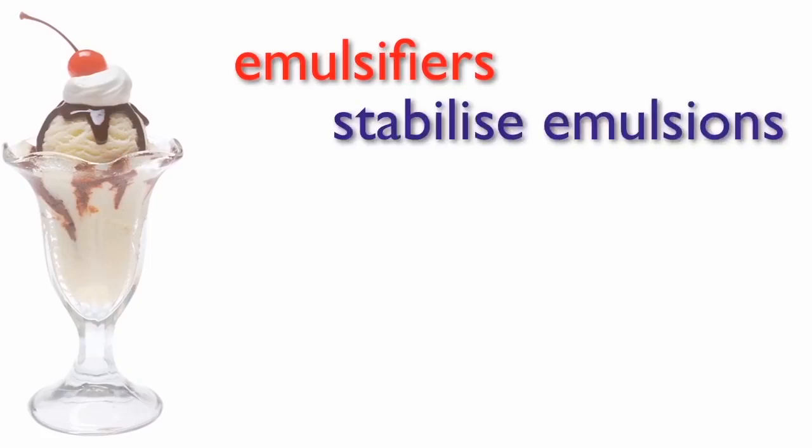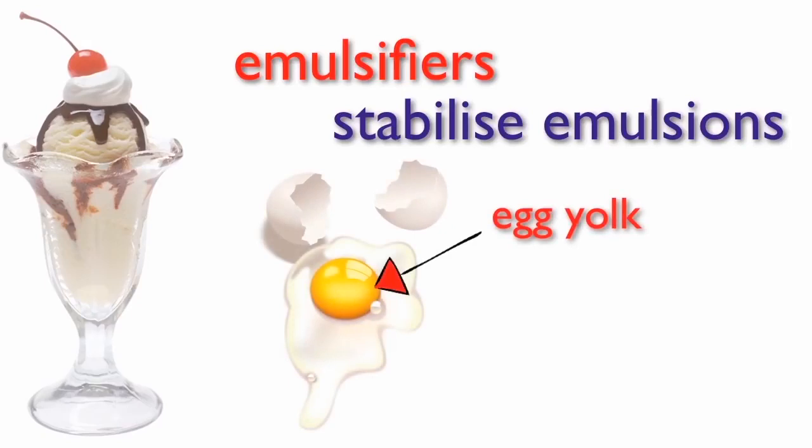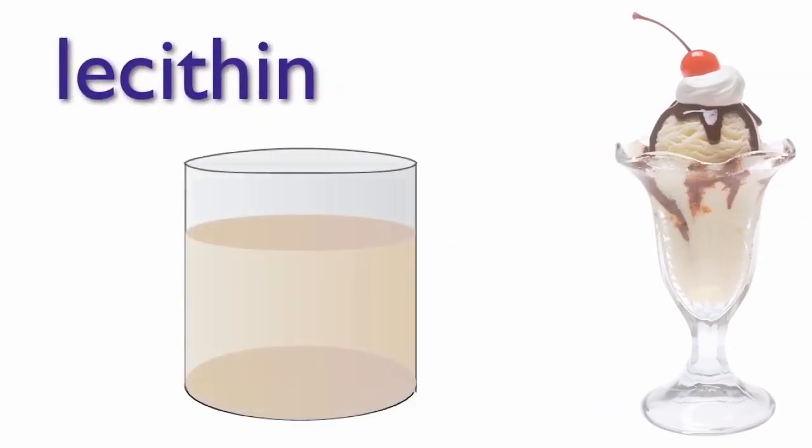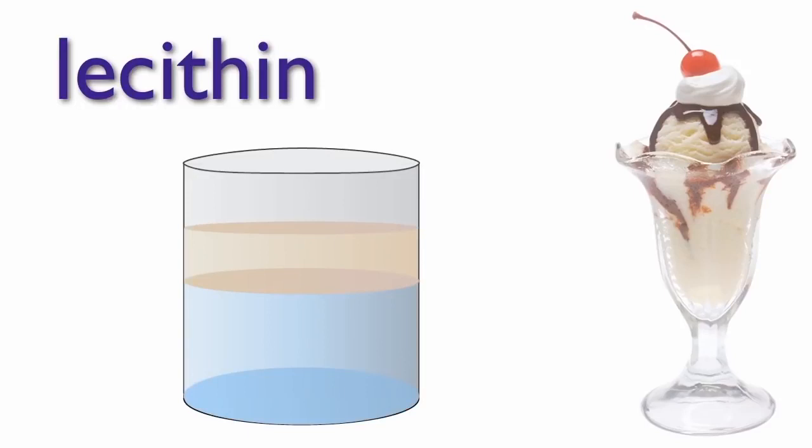When making ice cream, egg yolk is commonly added. The active emulsifier in egg yolk is called lecithin. Too little lecithin will cause the ice cream to separate, and too much will ruin its texture and flavor.